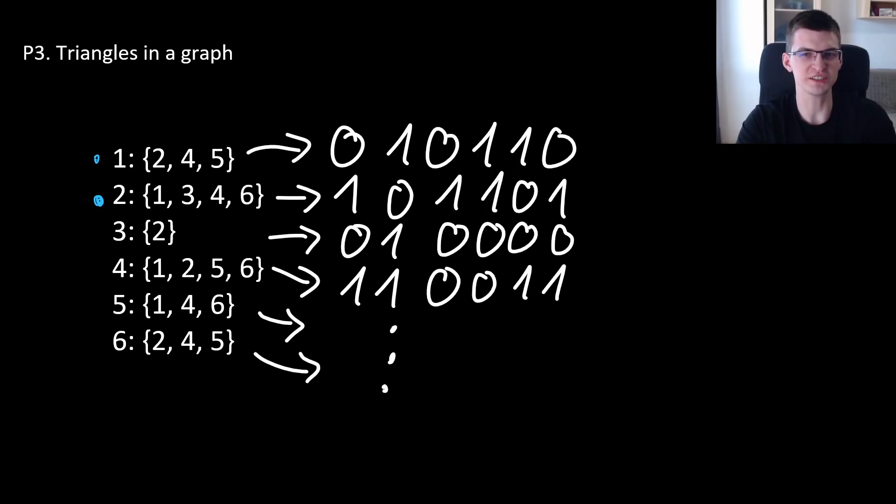So this mask bitwise AND this mask will find just one common bit on position 4. It will mean that 1 and 2 are both connected to 4. This doesn't mean that there is a triangle because we need one more edge between 1 and 2. So the algorithm should be for every pair of vertices u and v, if u and v are connected with a direct edge, then compute their bitwise AND of adjacency and add their popcount to the answer.